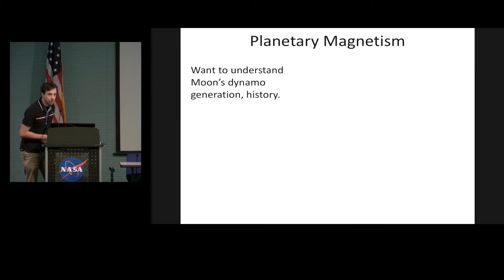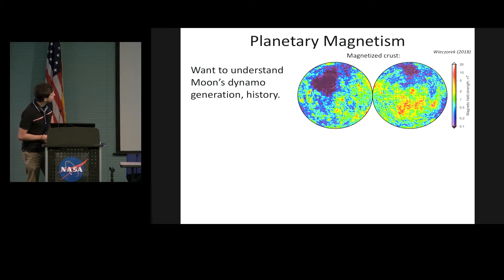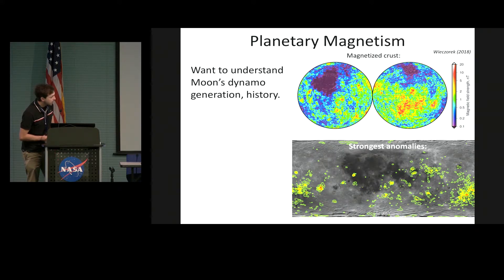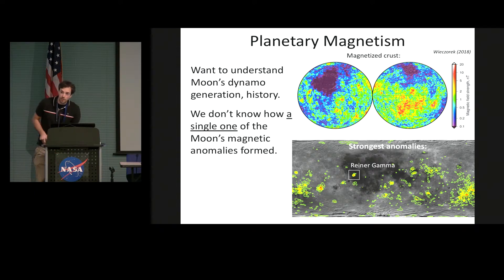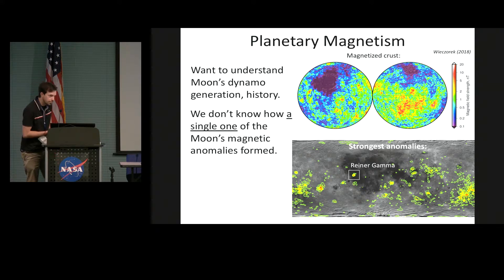We want to understand the moon's dynamo generation and its history. It's surprising the moon ever had a dynamo given its tiny core. From orbit we know the crust is magnetized at very large scales, as seen in this map of both hemispheres. Here's another map showing the very strongest magnetic fields, with greenish contours — and you can see the Reiner Gamma magnetic anomaly there. Surprisingly, we don't know how a single one of these features formed. We have ideas, but no definitive answers. It most likely formed from some dynamo process, but what's the geology behind these features?